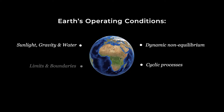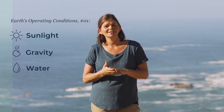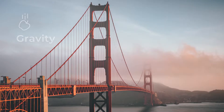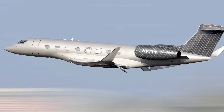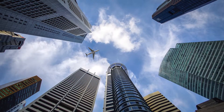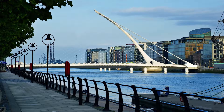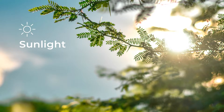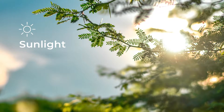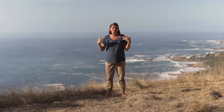Many of us learned about earth's operating conditions in primary school, but the way we design our world seems to be totally disconnected from our understanding of how this earth operates. We have sunlight, gravity, and water. Gravity is absolutely essential for us to design within — aircraft designers, people who design buildings and bridges totally understand the need to design within the context of gravity. And we're starting to recognize how important it is to design our systems to run on sunlight as an abundant renewable resource.